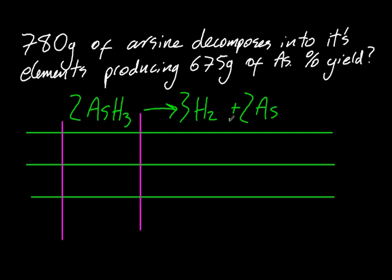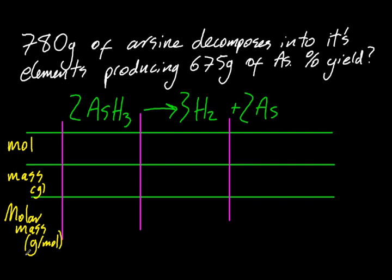I'm going to label moles, which is mass over molar mass. Don't forget the units, in case you forget later. Maybe the IB will give you credit for it. 780 grams goes there. 675, no, oh my, that's utterly wrong.